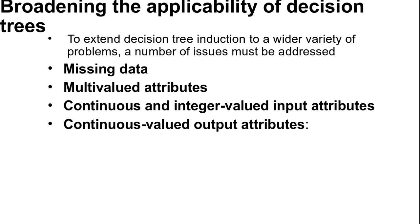First, missing data. In many domains, not all the attribute values will be known for every example. The values might have gone unrecorded or they might be too expensive to obtain. This gives rise to two problems: First, given a complete decision tree, and second, how should one modify the information gain formula when some examples have unknown values for the attribute. These are the questions addressed for missing data.